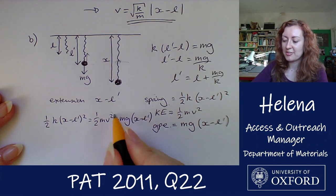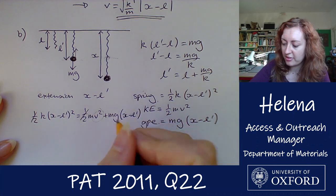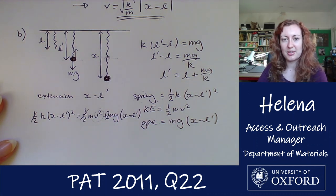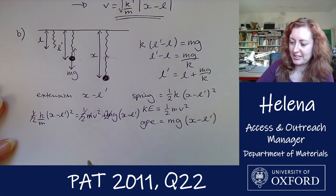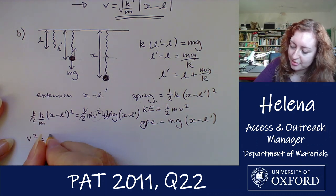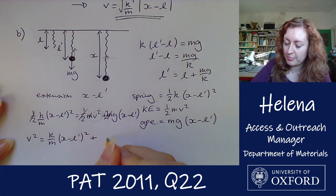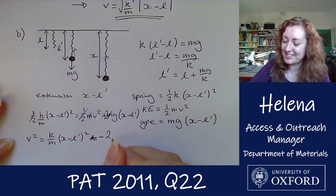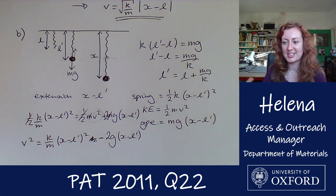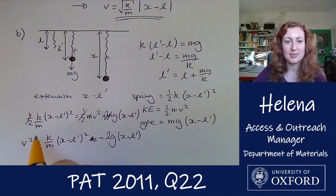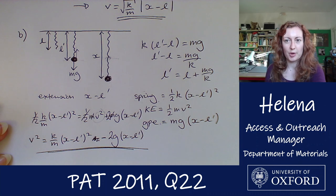Rearranging to find velocity: dividing through by one half gives a factor of two, then dividing by the mass m. We get v squared equals k over m times (x minus l prime) squared minus 2g(x minus l prime). I'll leave it in terms of v squared to avoid a large square root expression. That's the new velocity if the ball is released vertically upwards.